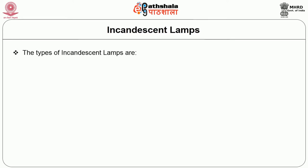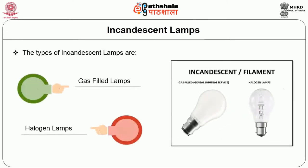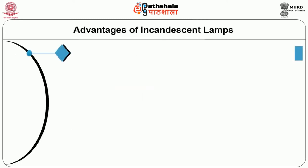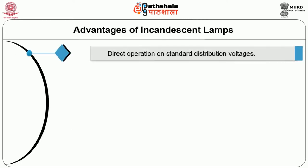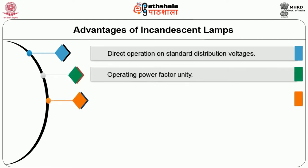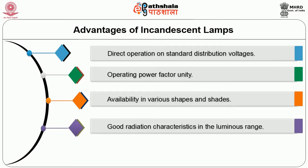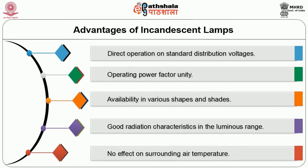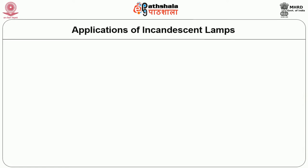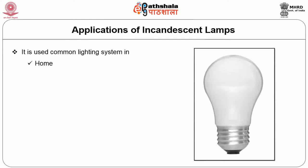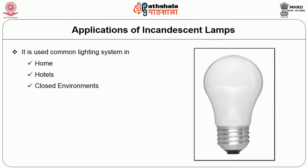Advantages of incandescent lamps: direct operation on standard distribution voltages, operating power factor unity, availability in various shapes and shades, good radiation characteristics in the luminance range, no effect on surrounding air temperature. Applications: commonly used in lighting systems in homes, hotels and closed environments. Halogen lamps are used in outdoor illumination of buildings, playgrounds, large gardens, car parking, and airport runways.